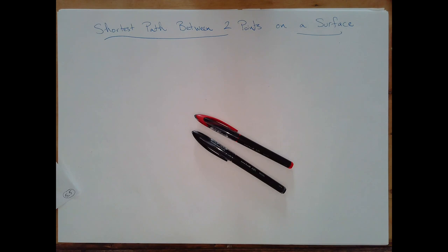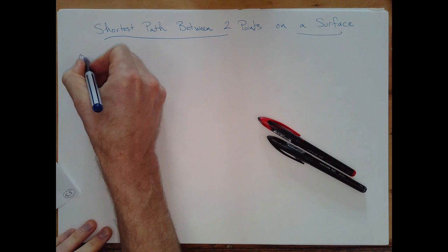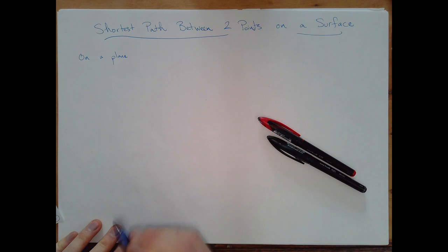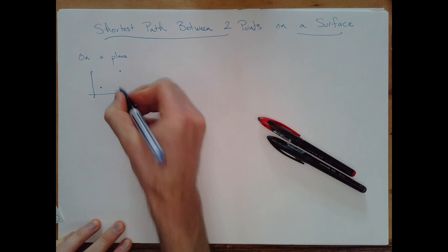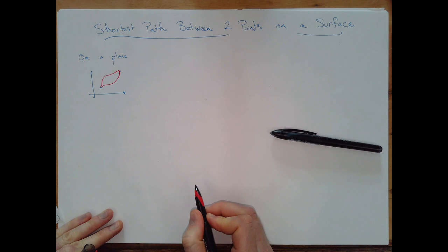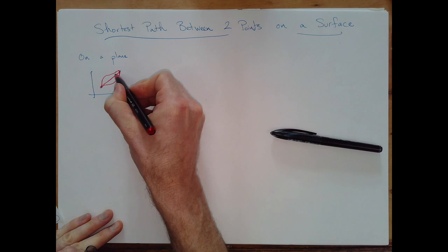The question we want to consider in this video is: what is the shortest path between two points on a surface? Starting with the very simple case of a plane — I think you ask anyone in the street and they will know the answer. What is the shortest path between two points? It's a straight line. Consider all the possible paths from one point to another, and a four-year-old would probably understand that the shortest path is the straight line.